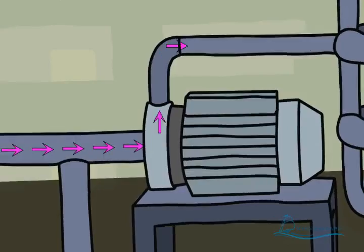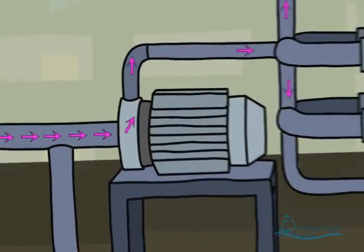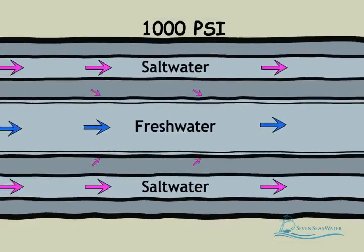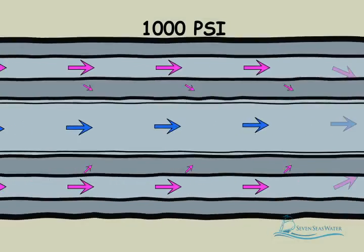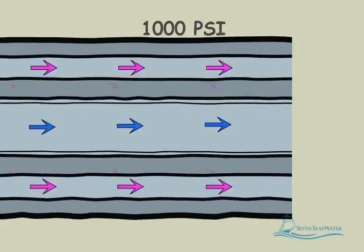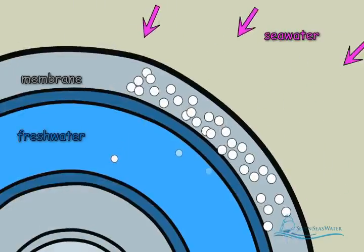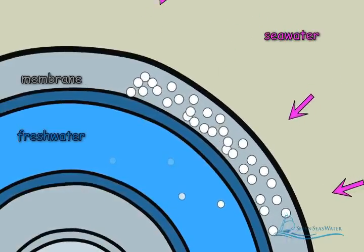High-pressure pumps increase the pressure of the seawater up to 1,000 psi. The pressure needs to be sufficiently high to overcome the naturally occurring osmotic pressure and force water from the saltwater side through the reverse osmosis membranes to the freshwater side. The salt particles in the seawater are rejected from passing through the membrane to the freshwater side and remain behind on the concentrated saltwater side.